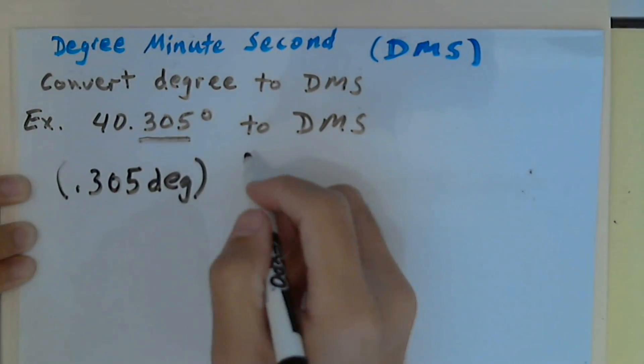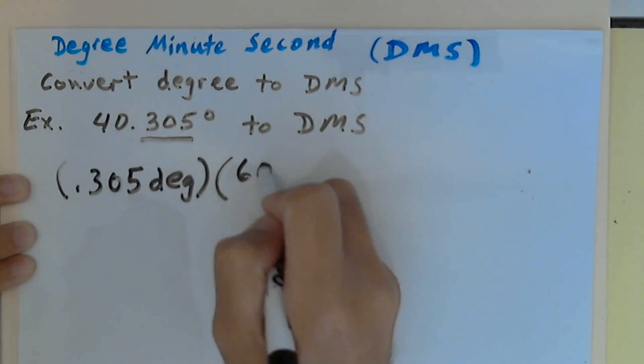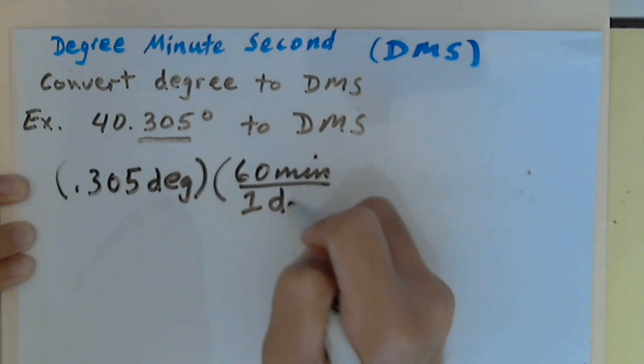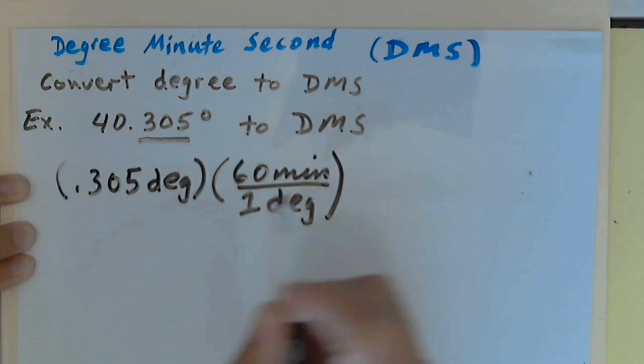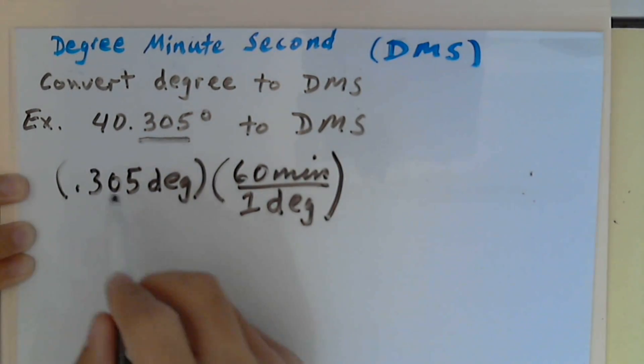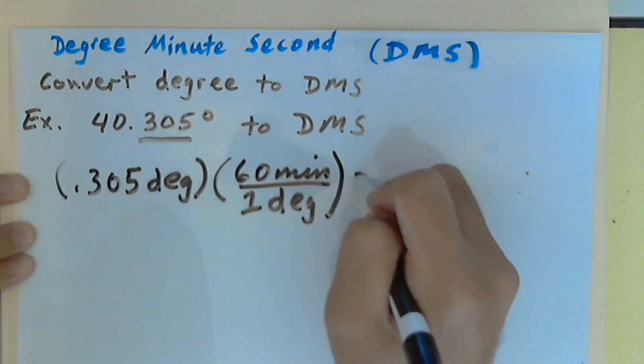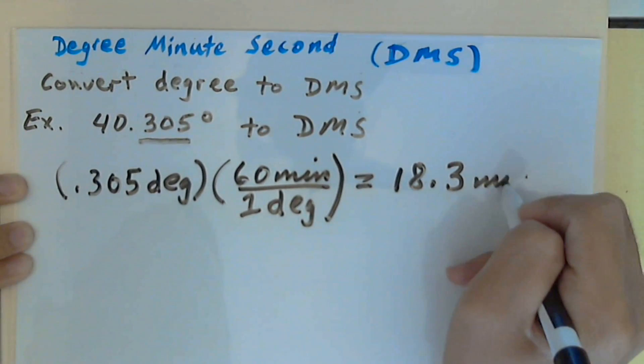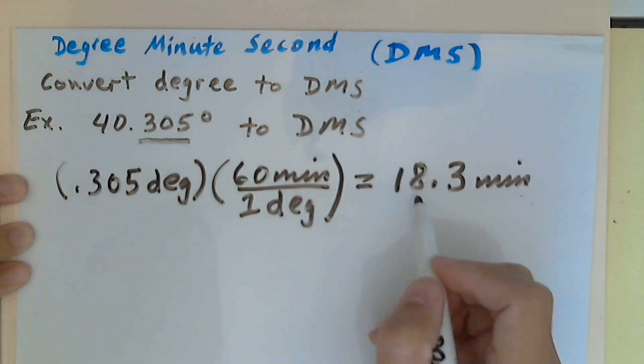There are 60 minutes for 1 degree. Degree and degree cancel out, and multiply these two numbers. I get 18.3 minutes. This represents 18 minutes and 0.3 of a minute.